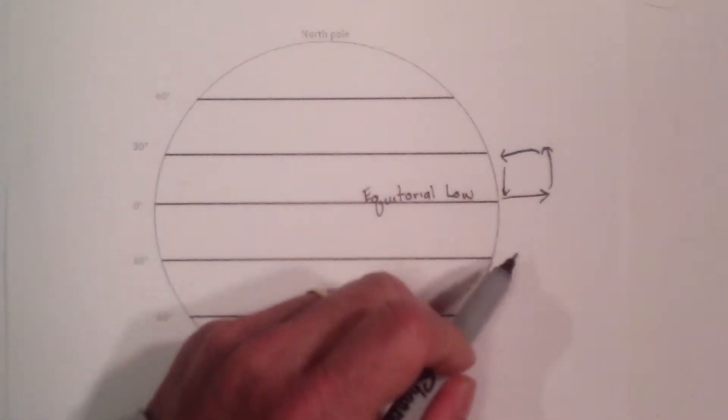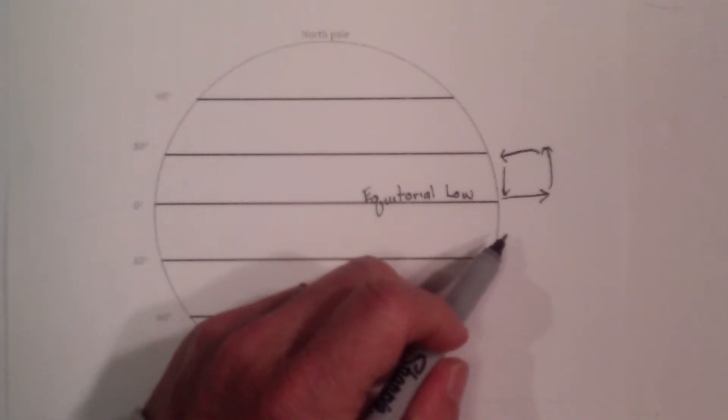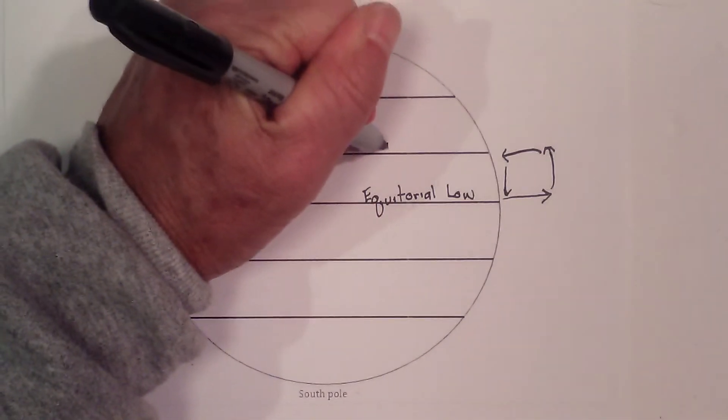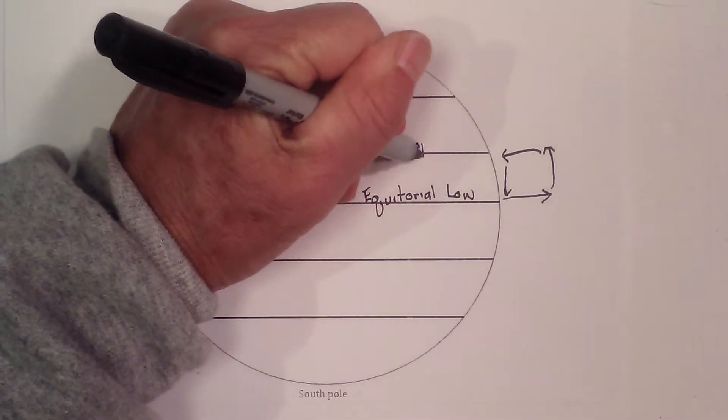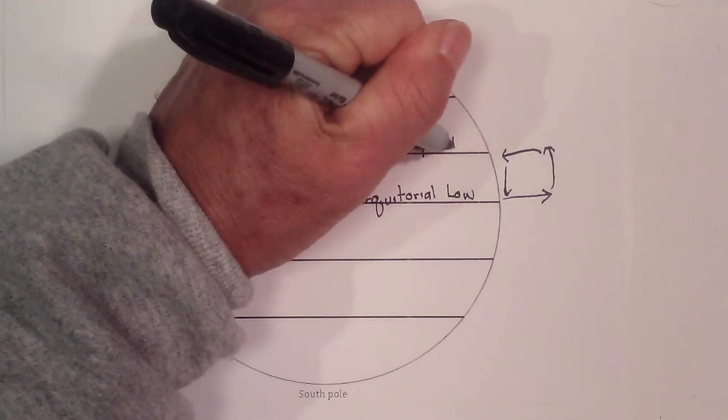Now as it sinks, it creates a high pressure system, and that's called the subtropical high.